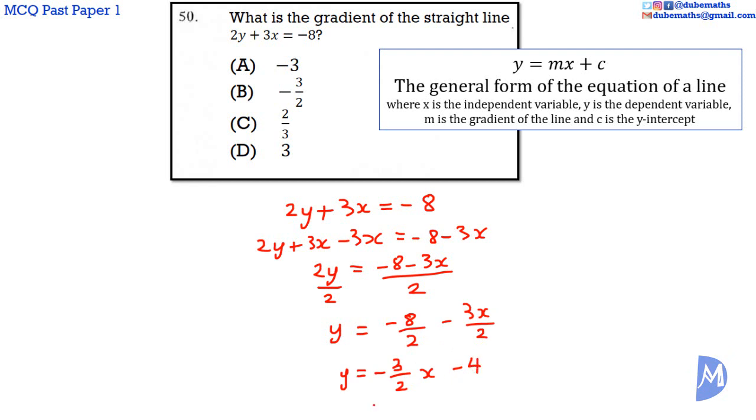The equation of the line is now in the form of y is equal to mx plus c, where m is the gradient. The gradient is negative 3 over 2. The answer is thus B.